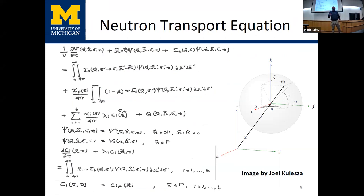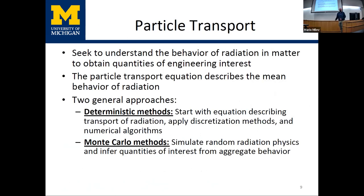This is the neutron transport equation — what you would see in a transport class. It is really hard to solve. You can't solve it analytically except for very simple cases, and solving it numerically is quite tough and takes a lot of computing effort. We care about solving it because it describes the average or mean behavior of the radiation field, which tells us doses, reaction rates, and other things engineers care about.